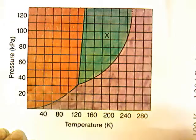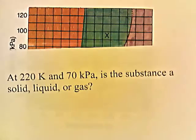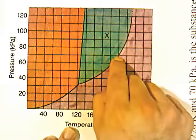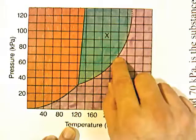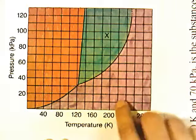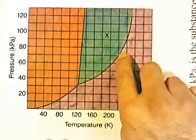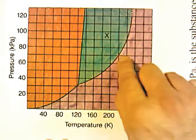At 220 Kelvin and 70 kilopascals, is the substance a solid, liquid, or a gas? 220 Kelvin and 70 kilopascals lands right on the line at that point. This line is the boundary between liquid and gas, so both liquid and gas can exist at 220 Kelvin and 70 kilopascals. Boiling can occur under these conditions — if you add heat, it'll boil; if you remove heat, the gas would start to condense.